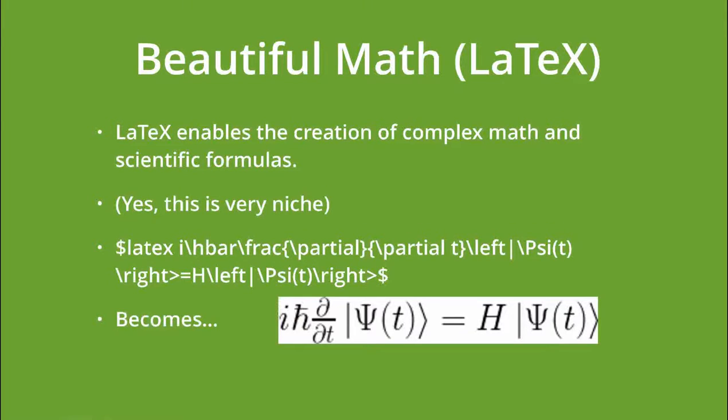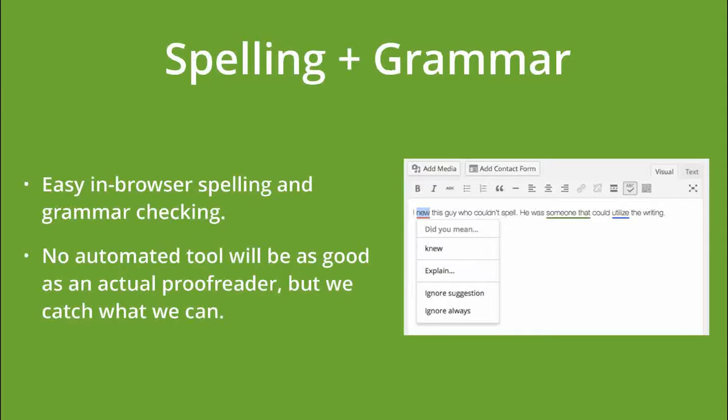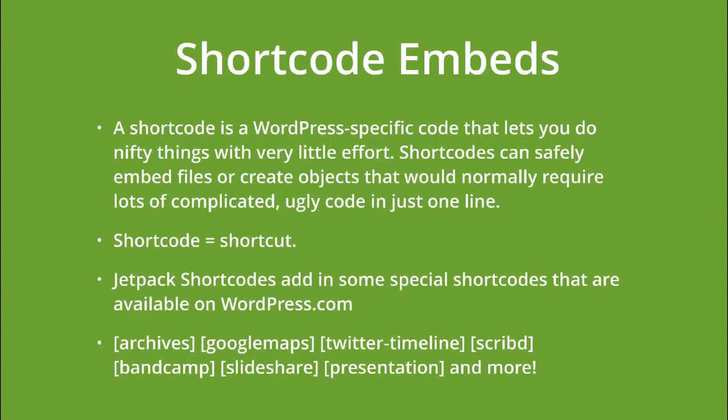Along similar lines, Jetpack can display mathematical equations for any mathematicians in the room. Jetpack also includes a spelling and grammar module that goes beyond basic spell check — it will notify you of passive voice and suggest better words or ways to phrase things. It's not as good as a human editor, but it's a handy automated way to improve your writing.